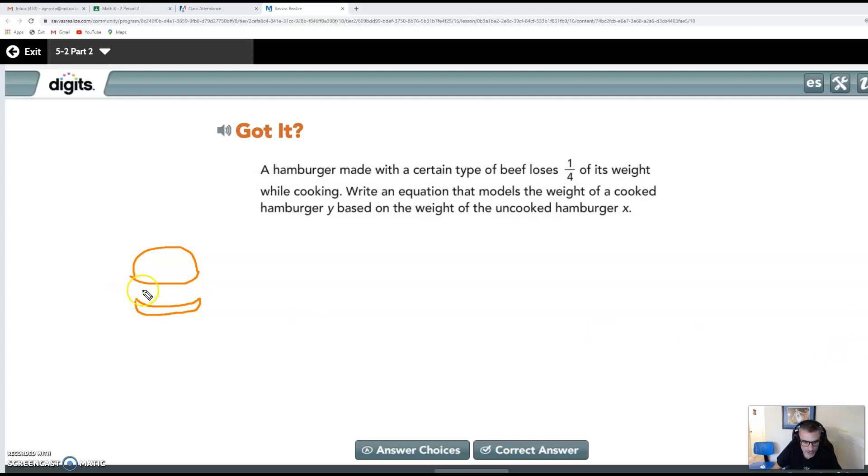So we got a burger. I can't do this problem without actually drawing a burger. There is my bun. And then in here we got patty. We got some cheese. Here's some cheese. We got some lettuce. And maybe we got some tomatoes. So there's some tomatoes. There's my burger. And it says write an equation that models the weight of a cooked hamburger y based on the weight of the uncooked burger x. So x is equal to uncooked. They tell us that right here. And y is equal to cooked. Cooked hamburger y. So y is equal to cooked.